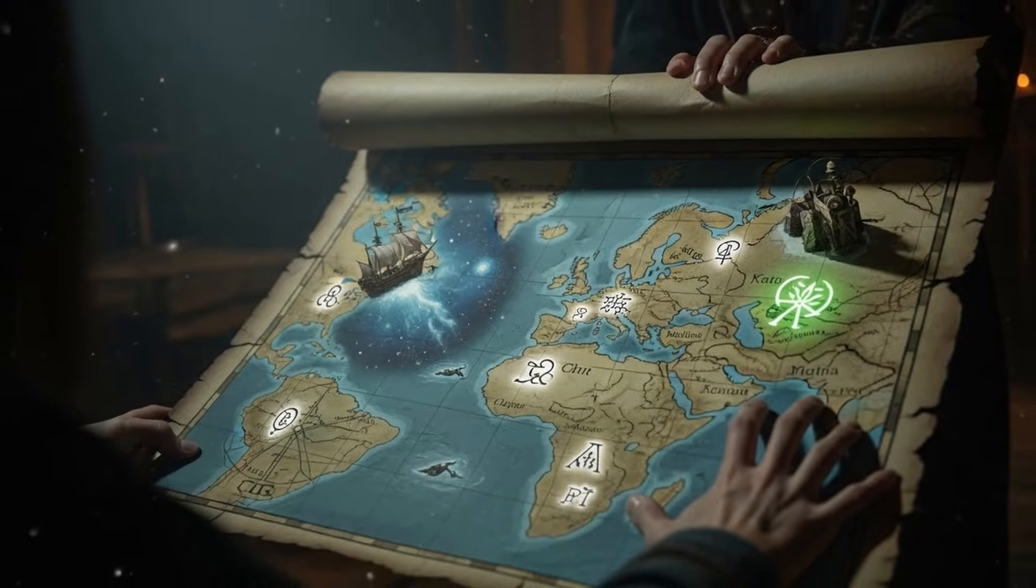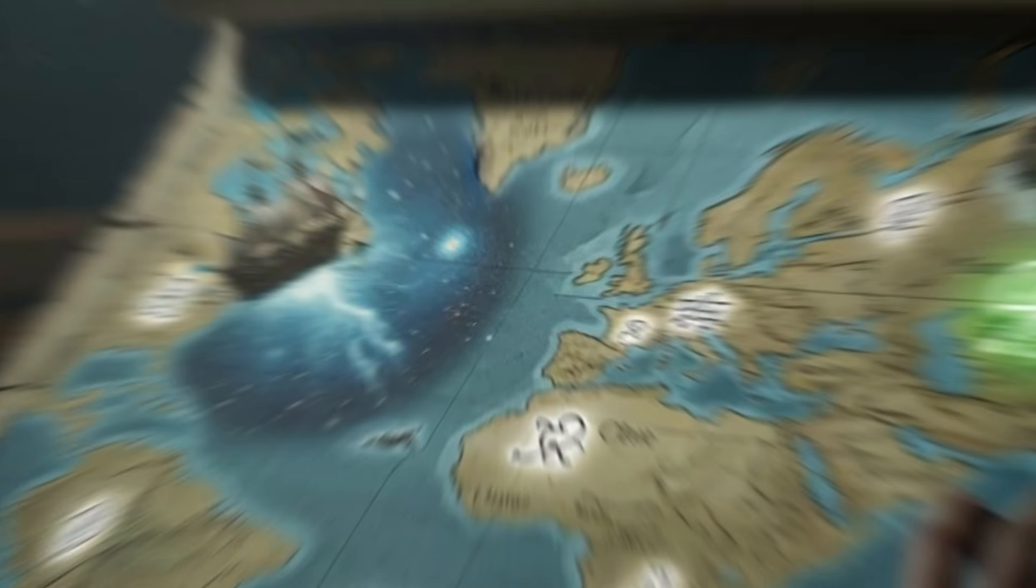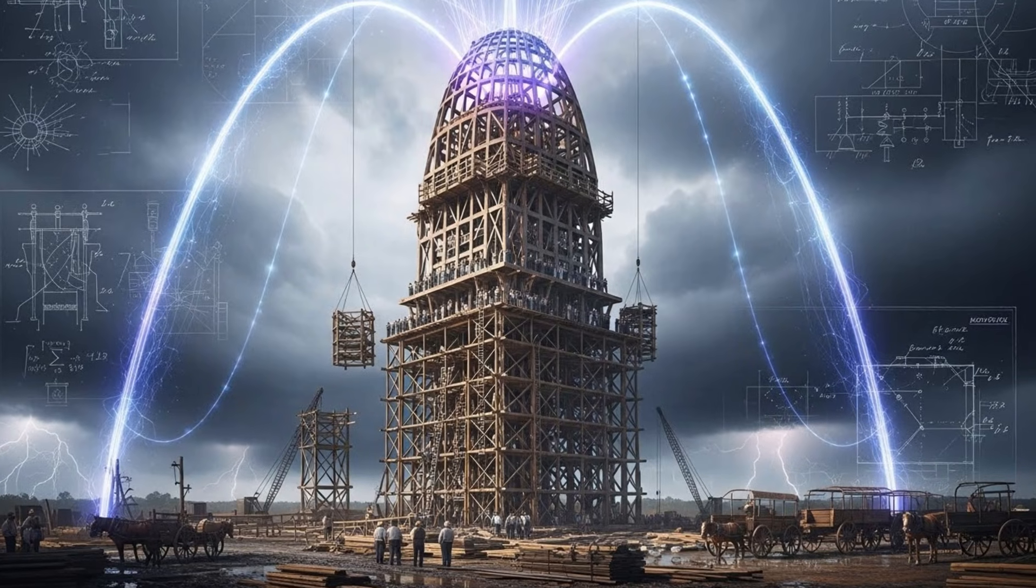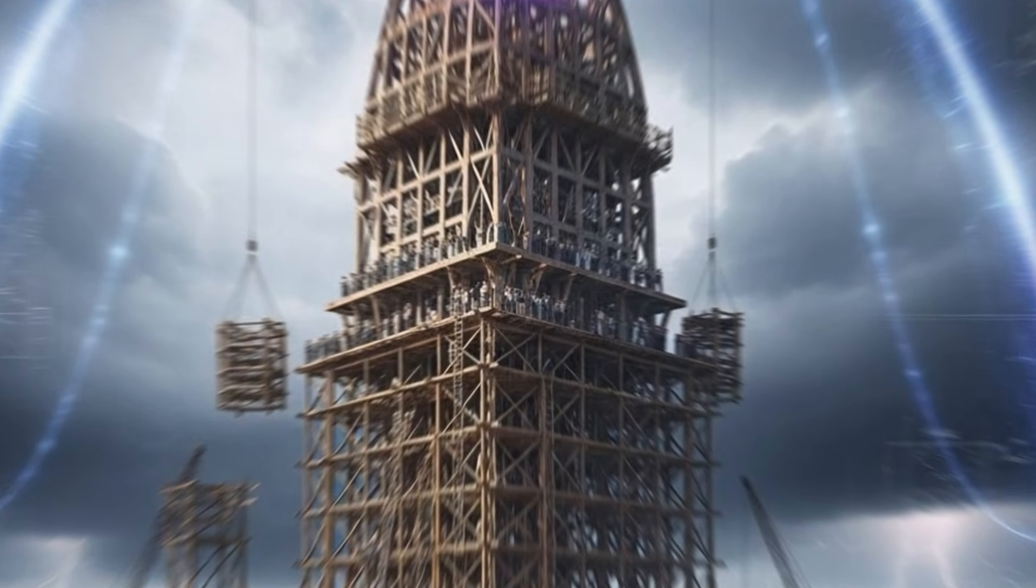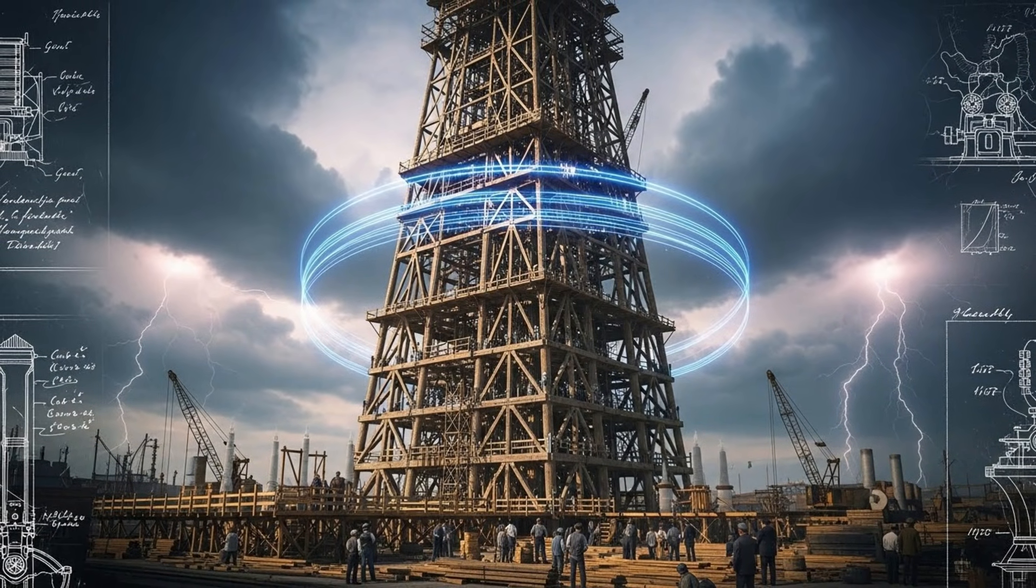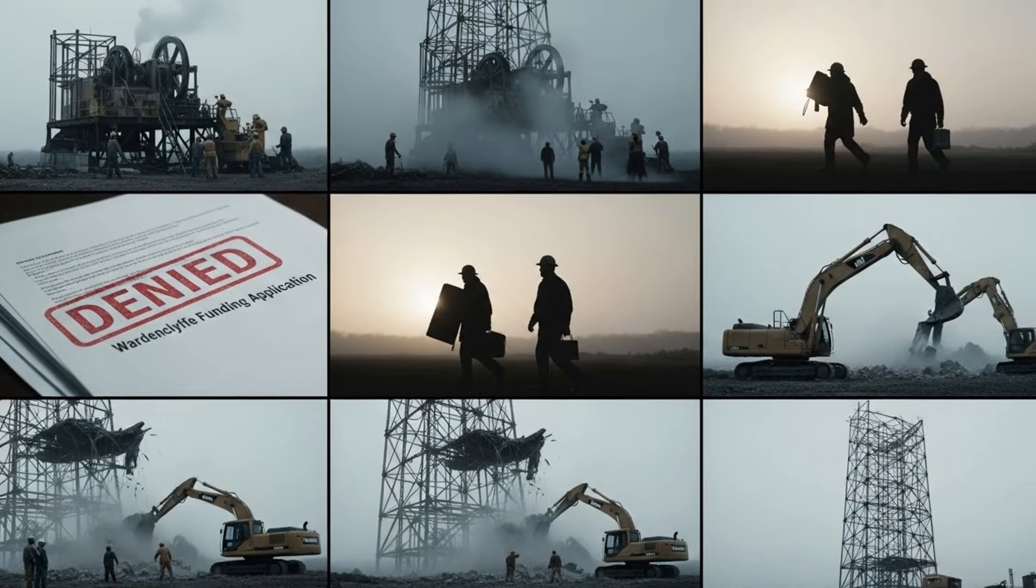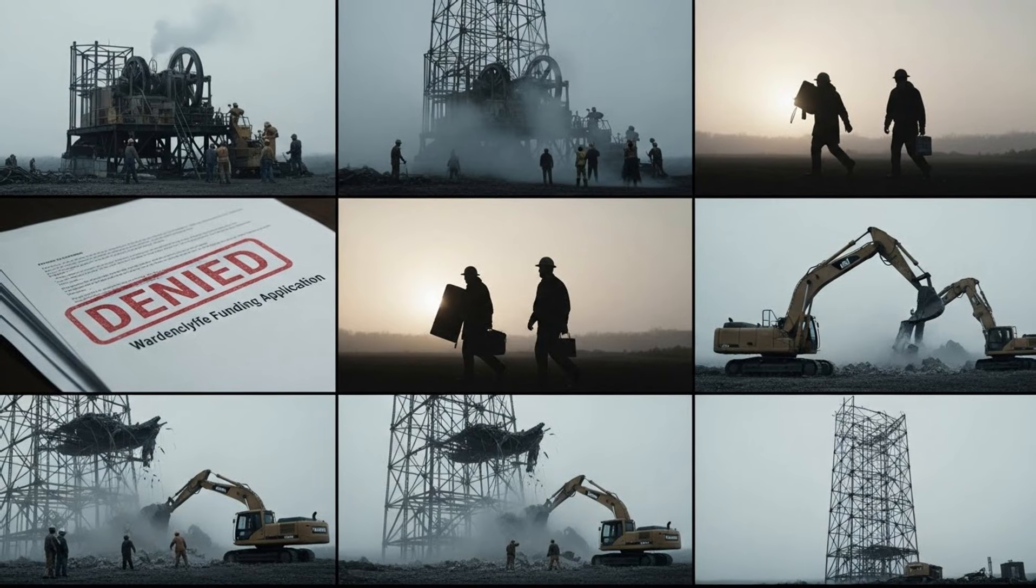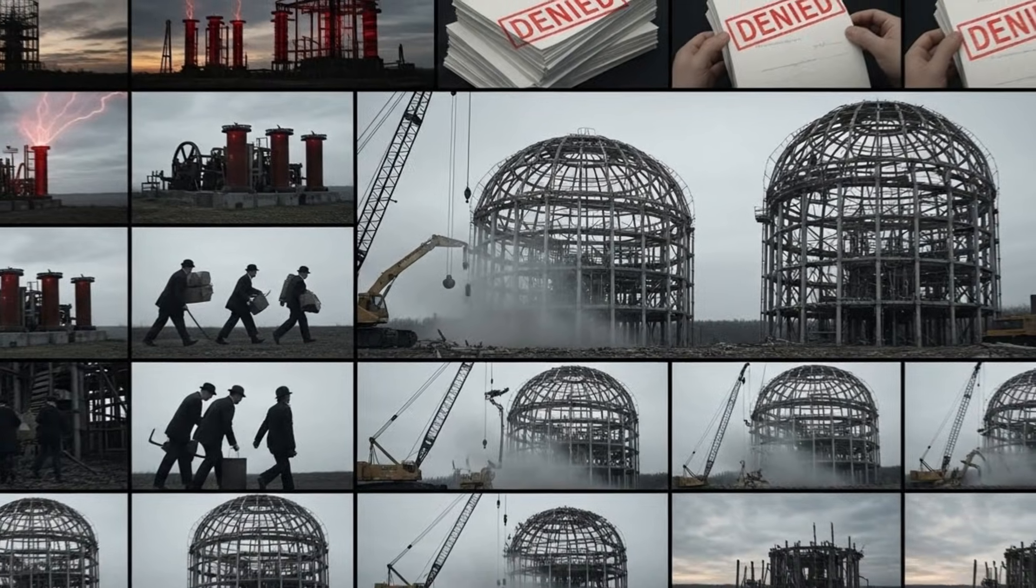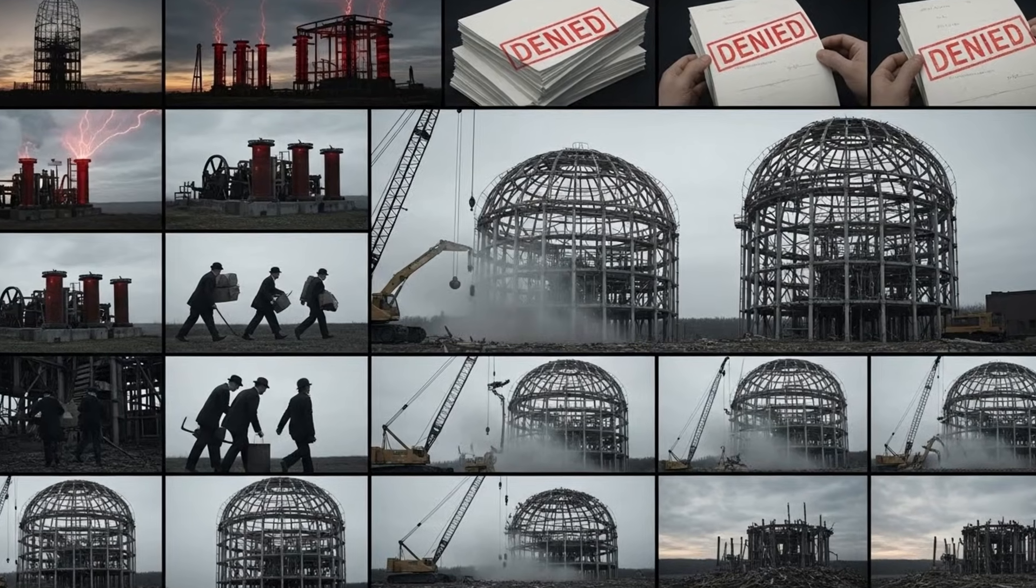The second discovery was even stranger. In 1901, Tesla began construction on Wardenclyffe Tower, a 187-foot structure on Long Island designed to transmit electrical power wirelessly across the globe. He promised his investors it would revolutionize communication and energy distribution. It never worked. Or at least, that's what history says. The project was abandoned in 1906. Tesla's funding dried up. The tower was torn down in 1917. For over a century, Wardenclyffe has been seen as Tesla's greatest failure. A brilliant idea that was simply ahead of its time.